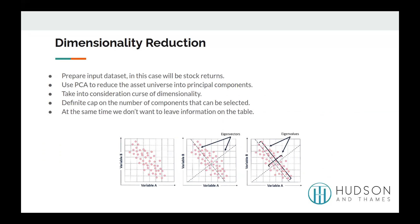The first part of the framework is dimensionality reduction, done through PCA to reduce the number of dimensions from the input dataset. An important issue arises: how many principal components do we select? We need to consider two major things. We want to set a cap on the number of dimensions selected so that the next step — clustering — works efficiently and in a timely manner. At the same time, we don't want to leave any useful information on the table.